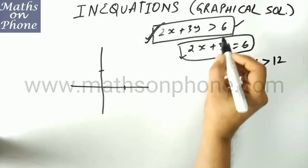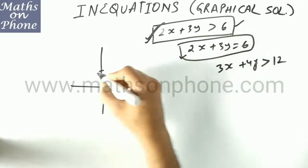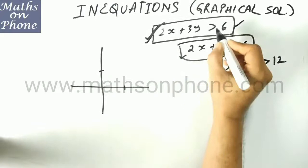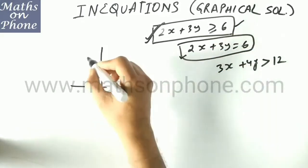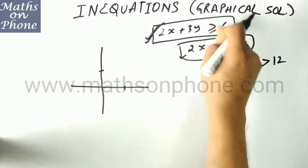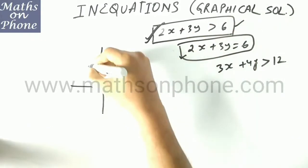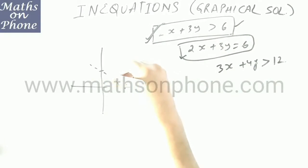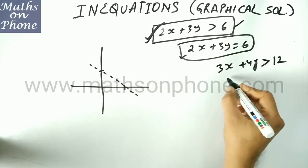Another thing to note: if just a greater or less sign is there — not equal to — you need to draw a dotted line, not a solid line. If it is greater than or equal to, it will be a solid line. So for only greater or only less, you need to draw a dotted line like this. I am drawing here — this is the line.